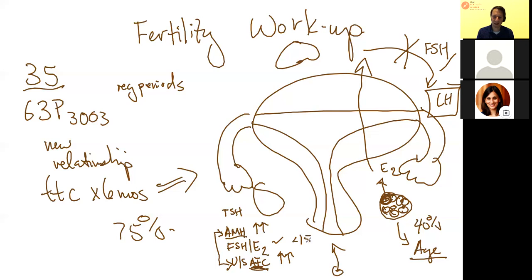We like the FSH level to be less than 15, ideally less than 10. If it is high, that means the brain is working really hard to communicate with the ovary and the systems that keep the brain at bay are not present. As the woman's age increases, this communication between the brain and ovary doesn't work as well, so the FSH level starts to rise and the brain starts to work harder.